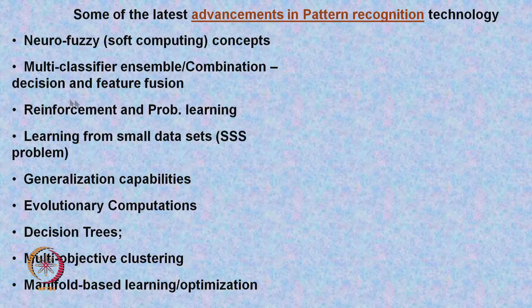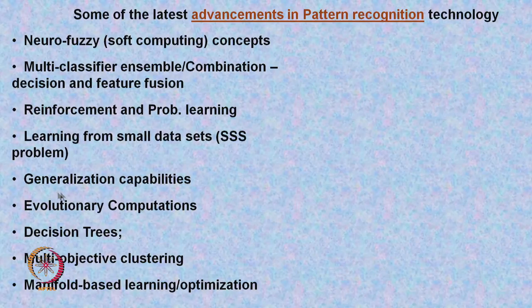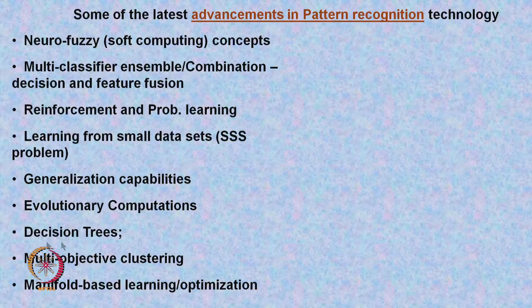Further advances include reinforcement and probabilistic learning, methods addressing the small sample size (SSS) problem, generalization in neural networks, evolutionary computation, decision tree-based clustering, and multi-objective clustering algorithms that minimize one criterion while maintaining another constraint — unlike k-means which only minimizes Euclidean distance to the mean.